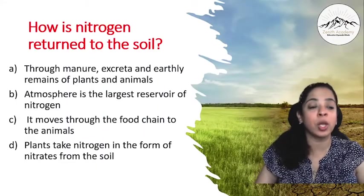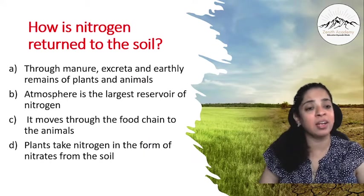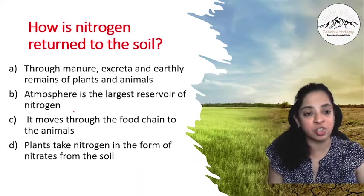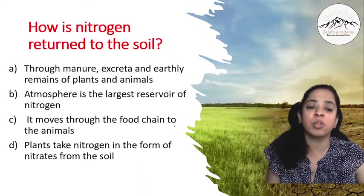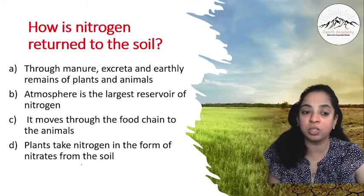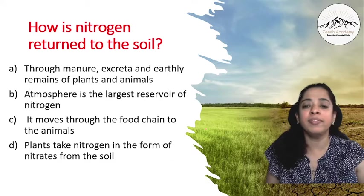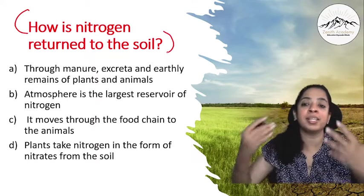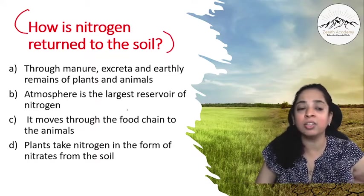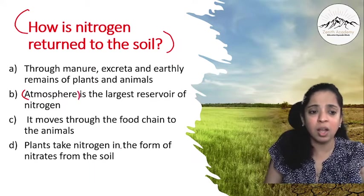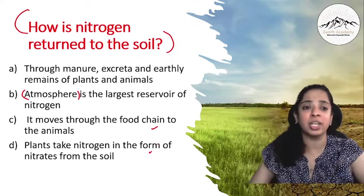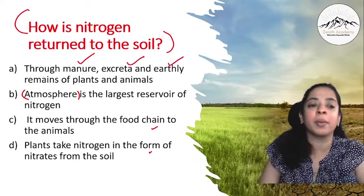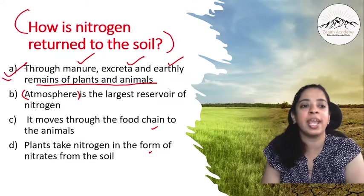How is nitrogen returned to the soil? Through manure, excreta and earthly remains of plants and animals, or the atmosphere is largest reservoir of nitrogen, or it moves through the food chain to the animals, or plants take nitrogen in the form of nitrates from the soil? See, many of the options can be correct in itself but how is the nitrogen returned to the soil? We can't take it directly through the atmosphere, right? These options are correct partially but how it is returned to the soil? Through manure, through excreta and the earthly remains of plants and animals. So option A is correct.